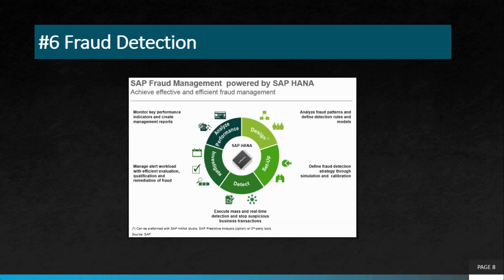The next project is SAP fraud detection. SAP provides a fraud detection management system powered by SAP HANA. With SAP HANA, businesses can detect and prevent fraud in real time, protecting assets, improving compliance, and reducing risk. SAP HANA is divided into different CDN networks where data is stored, and the fraud detection technology runs on SAP HANA database in real time.